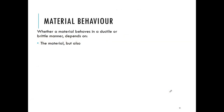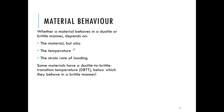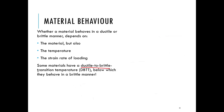Whether a material behaves in a ductile or brittle manner depends not only on the material itself, but also on the temperature and the rate of loading. For temperature, some materials have a transition temperature known as the ductile-to-brittle transition temperature, below which those materials behave in a brittle manner.